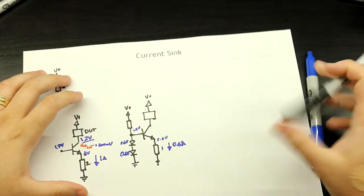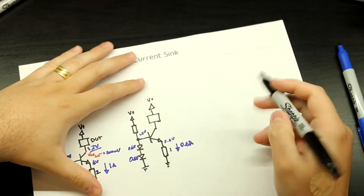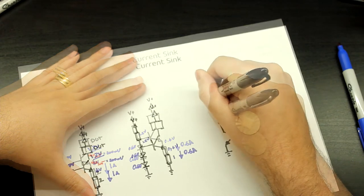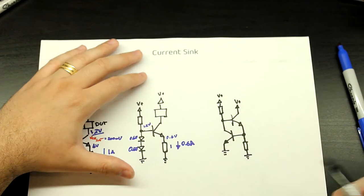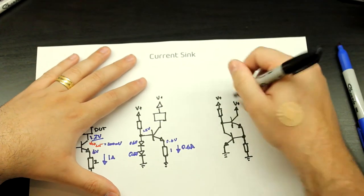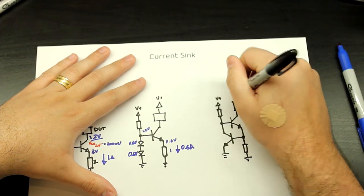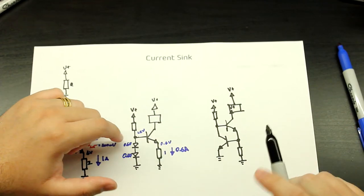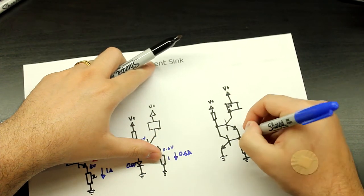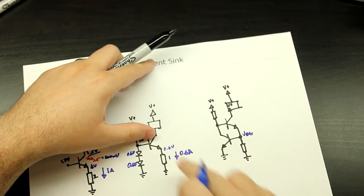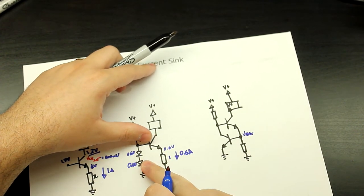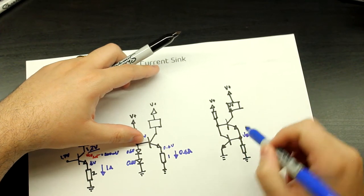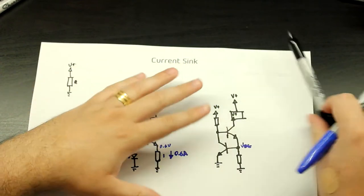Another way of doing the same thing is to use two transistors in this configuration. This is basically the same thing, but with one difference: here you always have VBE instead of the 0.6 volt or whatever voltage you decide on. If you use a Zener, just calculate for that. In this case it's constant at VBE, because this transistor is going to keep it that way.